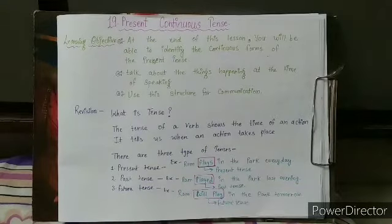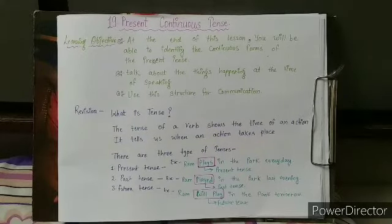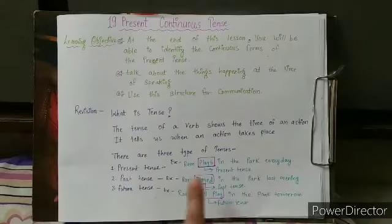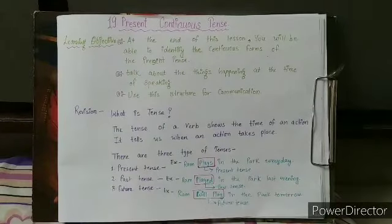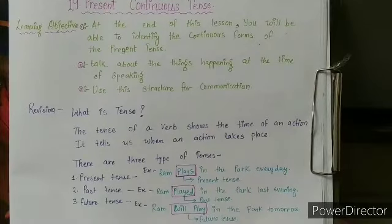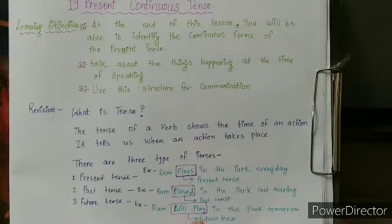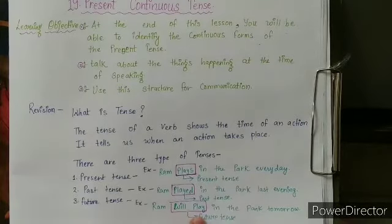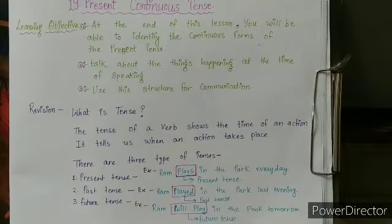Past Tense: the verb 'played' is in the past tense, as it tells us that the action took place in the past. Future Tense example: Ram will play in the park tomorrow. The verb 'will play' is in the future tense, as it tells us that the action will take place at some time in the future.